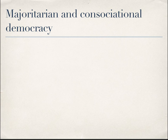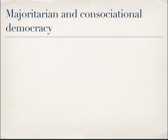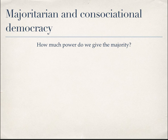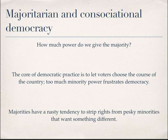One major difference in types of government is whether we have majoritarian or consociational democracy. The distinction is in how much power we give to the majority. There is a moral tension here: if we give too much power to the minority it frustrates democracy, but majorities tend to run over the human and democratic rights of minorities when given too much power. There's a balancing act between powers offered to majorities and those offered to minorities.